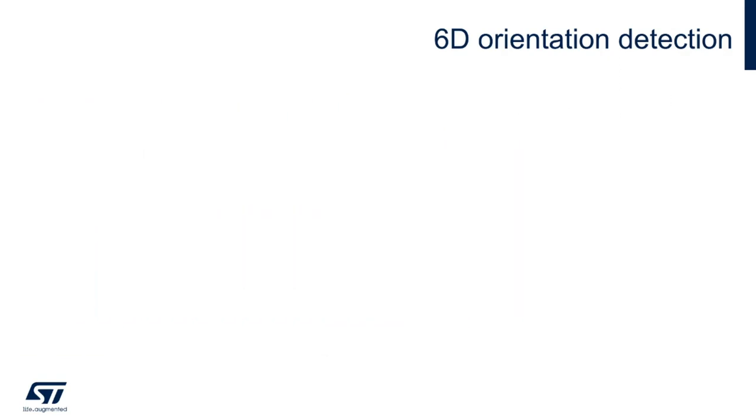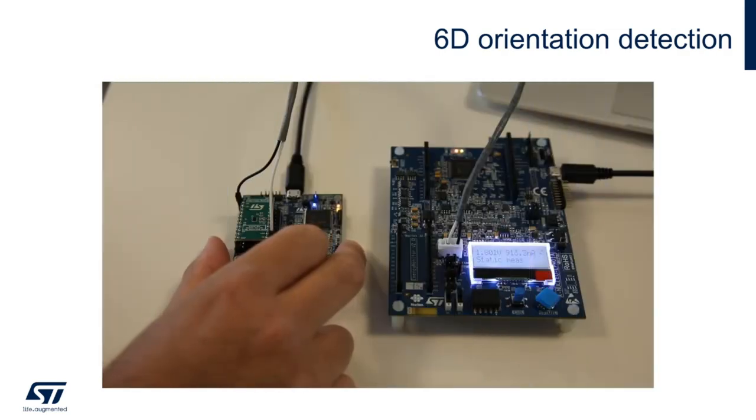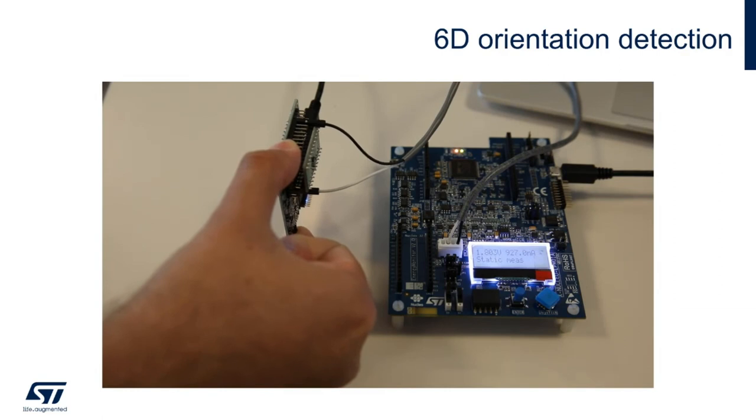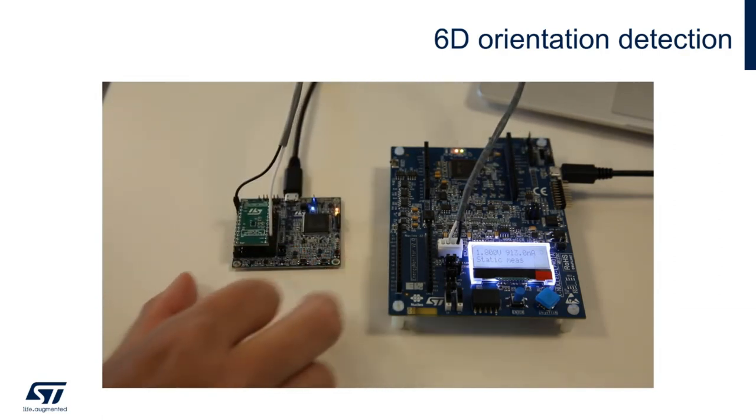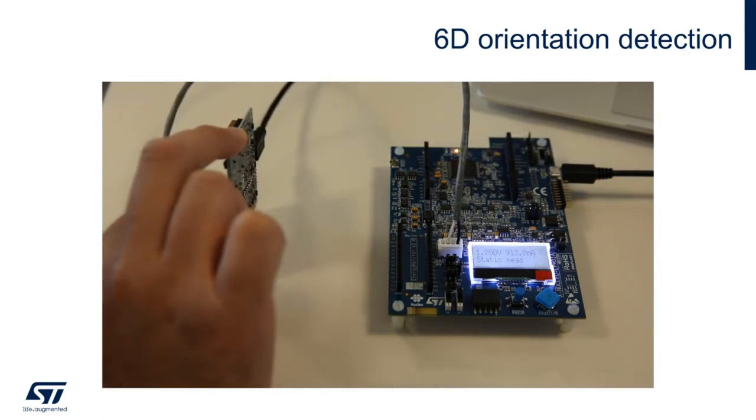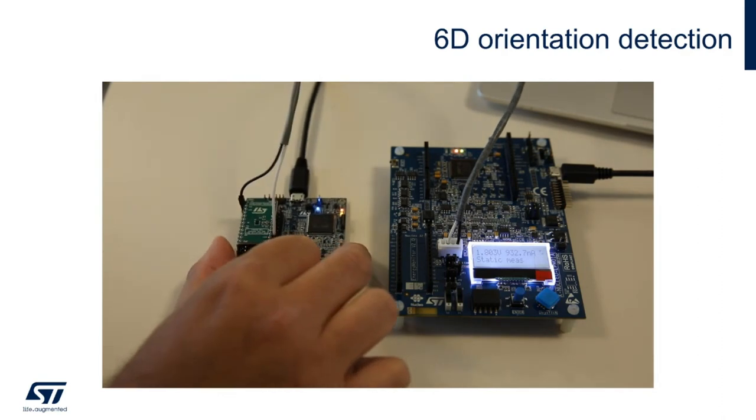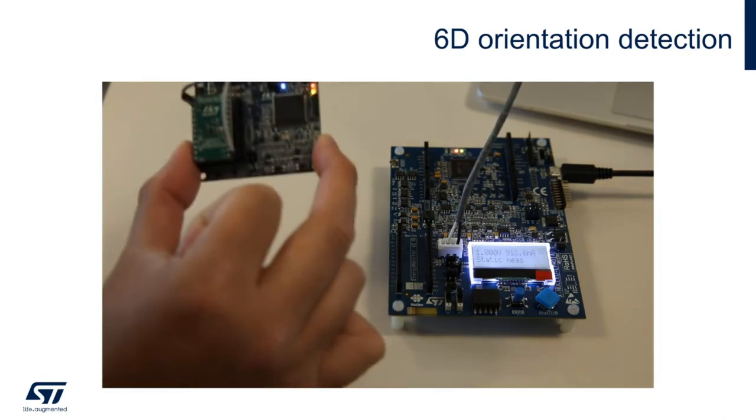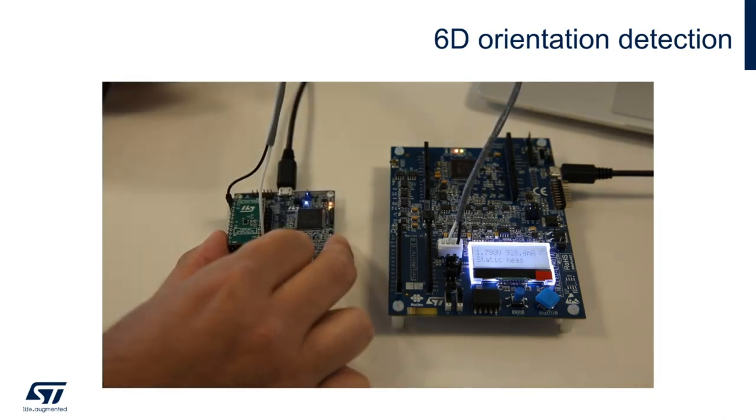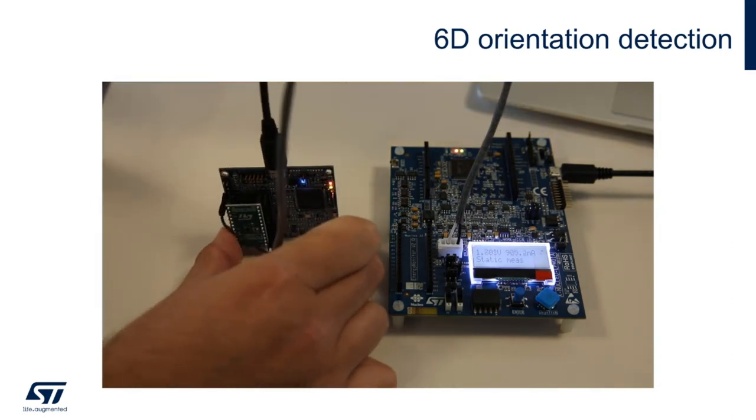And finally, but definitely not the least, let's look at the current consumption of the LIS2DW12 when running the 6D orientation detection. As expected, the current consumption of the device is about 900 nanoamps, still being able to detect the device orientation but being extremely power effective when doing so.